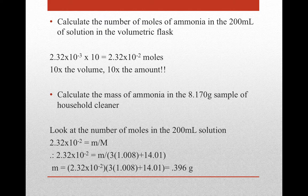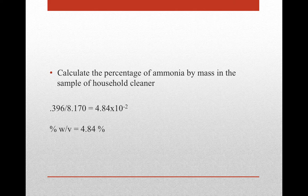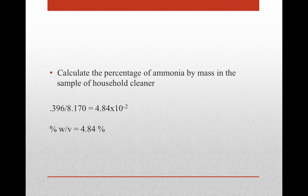That's our mass of ammonia in the solution, but we need the percentage mass. The percentage of ammonia by mass equals 0.396 grams divided by the total mass of household cleaner, 8.170 grams. As a decimal this is 4.84 × 10⁻², and multiplying by 100 gives us 4.84% to three significant figures.